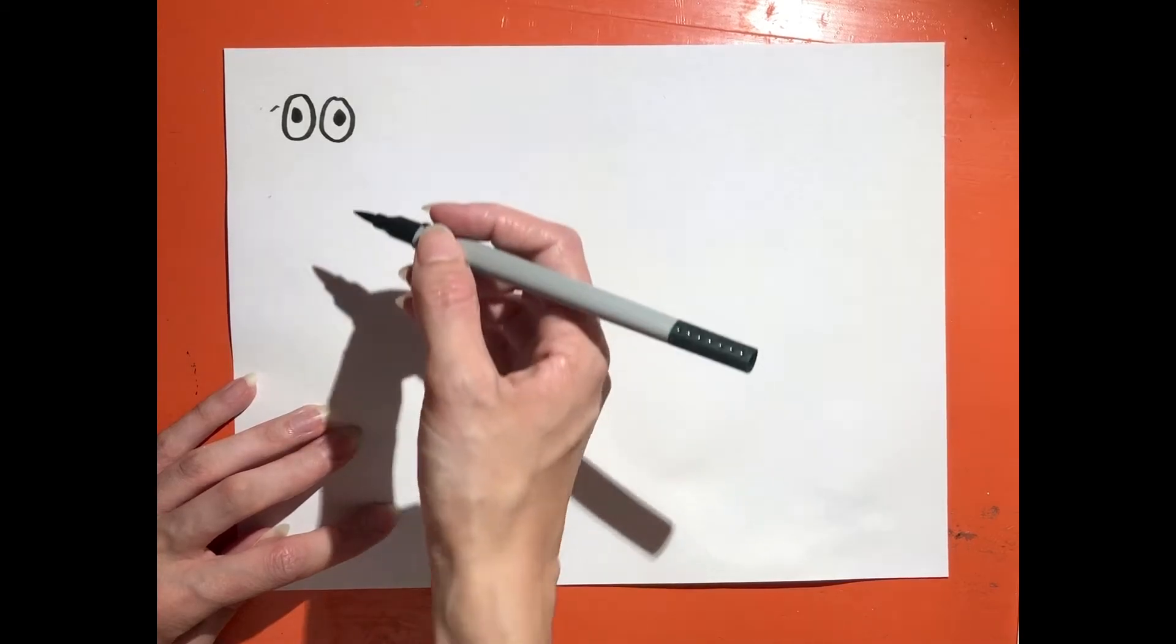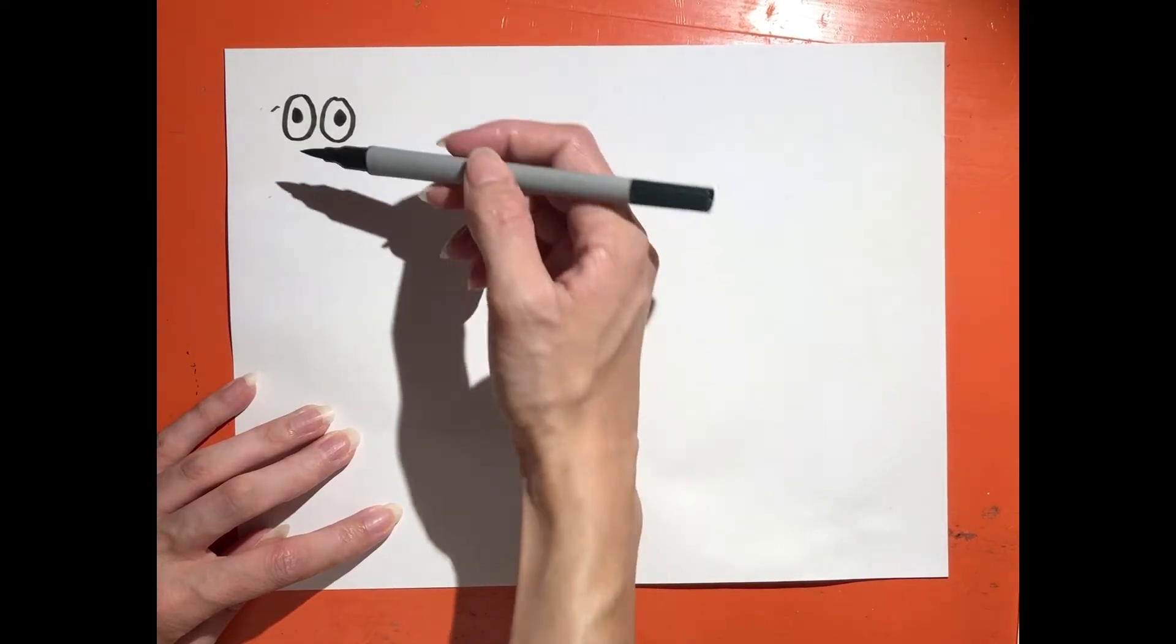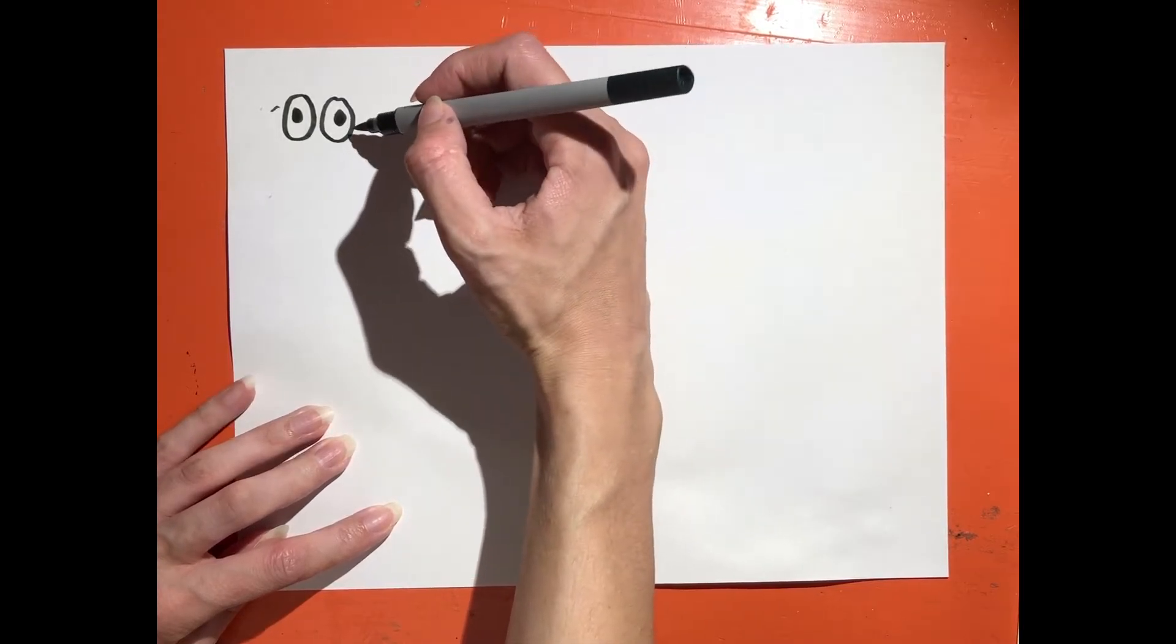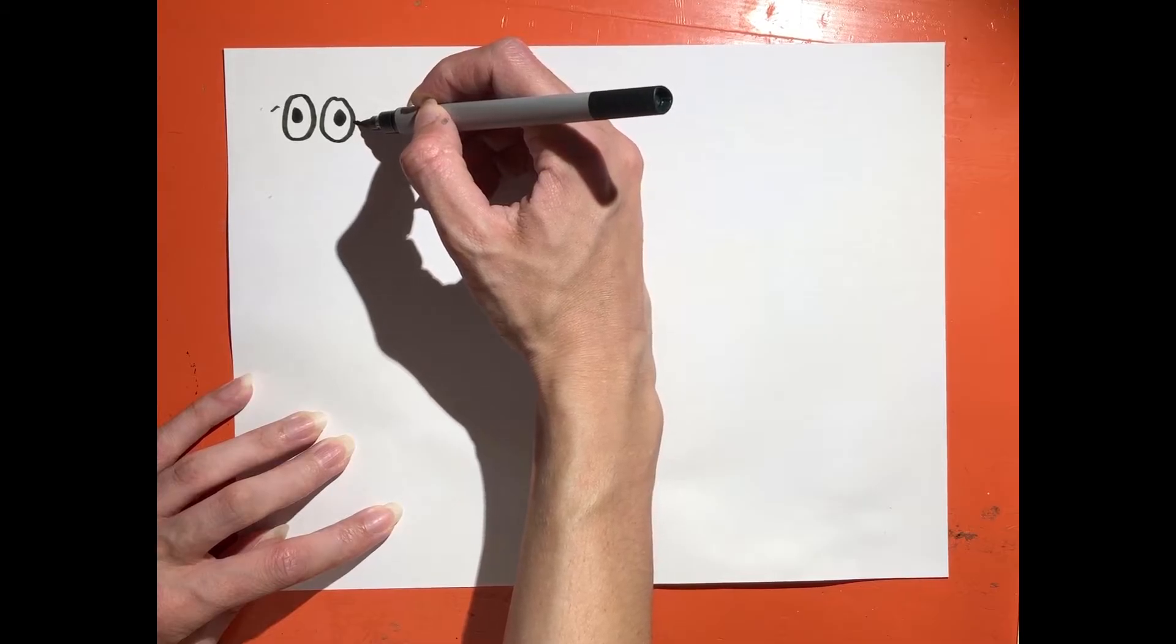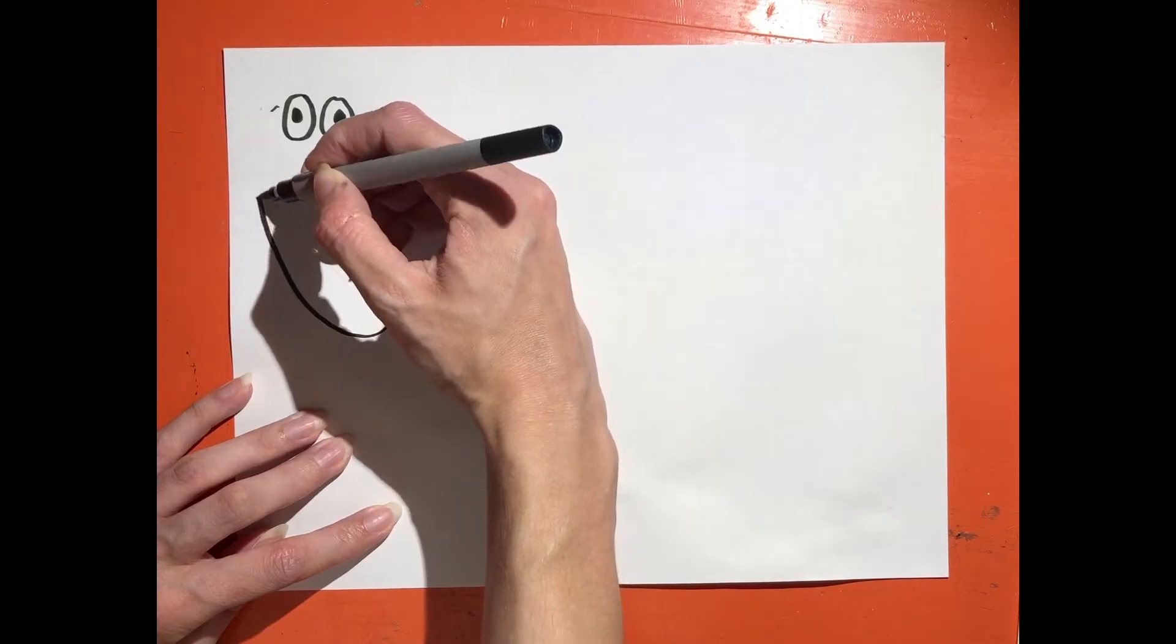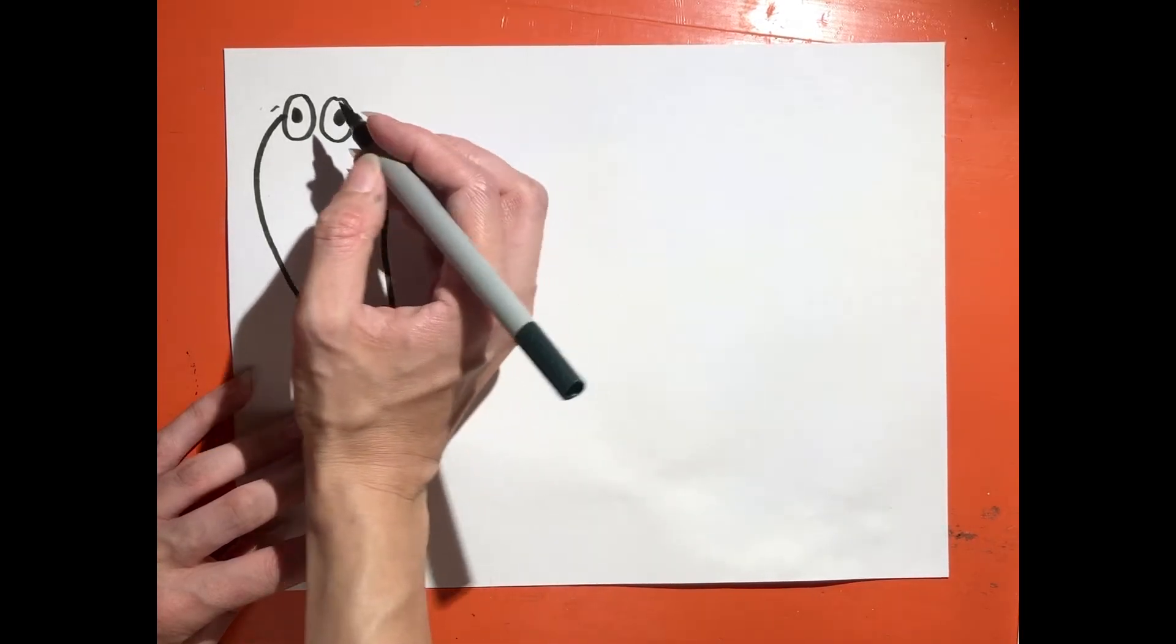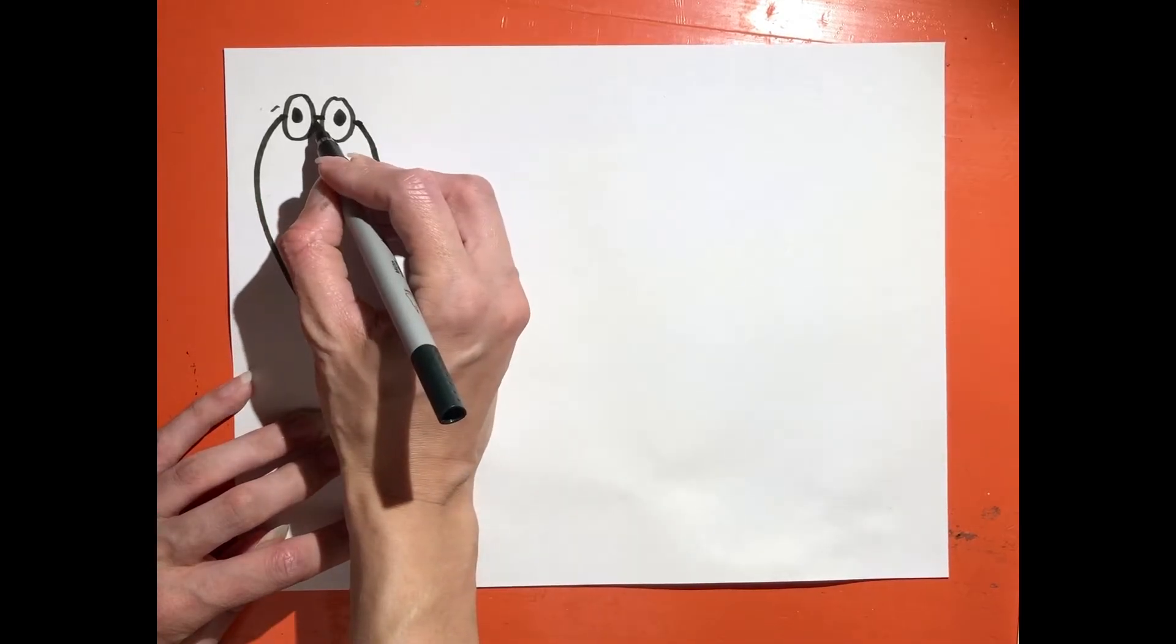Now we're going to make a shape around these eyes to make the turtle's head. We're going to make kind of a wonky long oval. So we'll start at the corner here by one of the eyes, curve it down and around to the other eye and end our line. We have a little bit of a space between the eyes here. So we're going to go ahead and draw a little line to connect the head.